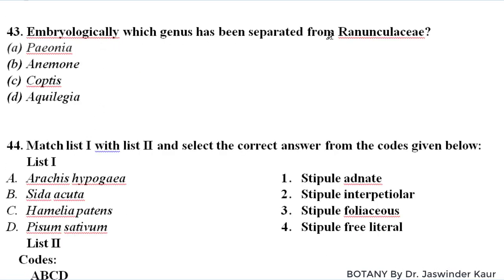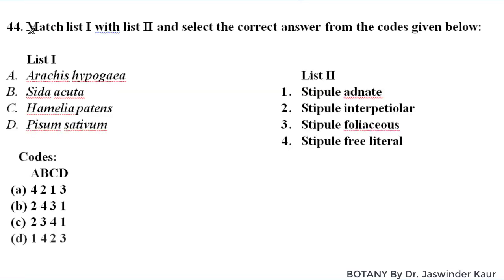Embryologically, which genus has been separated from Ranunculaceae? On the basis of embryological studies, Paeonia has been separated from Ranunculaceae and it has been allotted its own family — family Paeoniaceae.